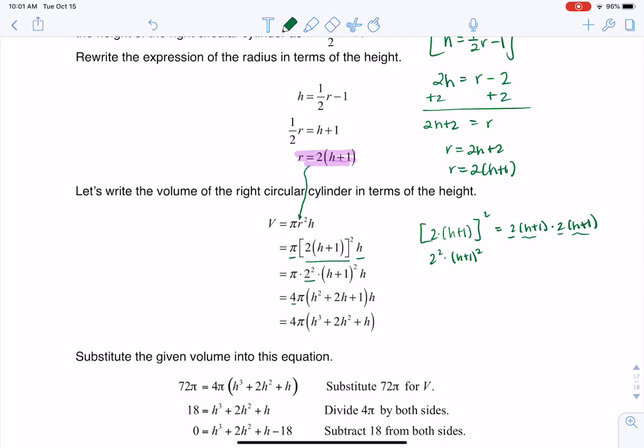When I actually foil out h plus 1, or I should say when I foil out h plus 1 squared, you're going to have a 4, and then you're going to have h squared, outer and inner are both h. So I get 2 of them plus 1, right? And then don't forget, we still have this h over here, and I distribute it through.